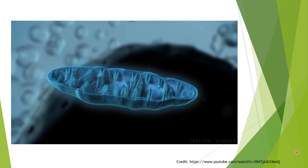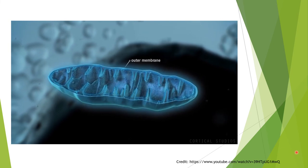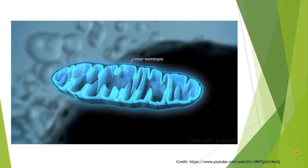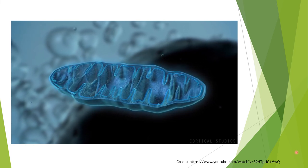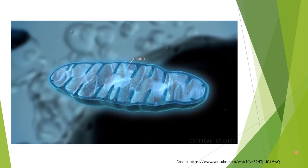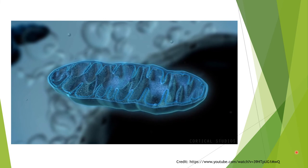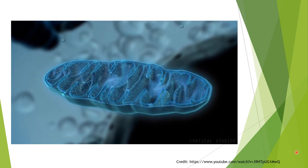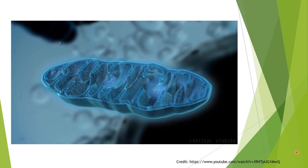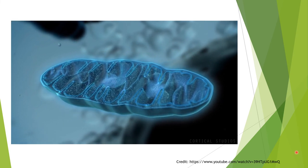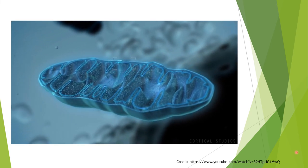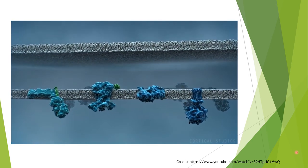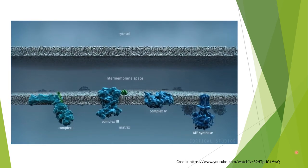Mitochondria consist of two membranes: an outer membrane separating it from the cytosol, and an inner membrane surrounding the so-called matrix. The area between these membranes is called the intermembrane space. ATP is generated at the inner membrane of mitochondria by an efficient mechanism called oxidative phosphorylation, involving several membrane protein complexes.